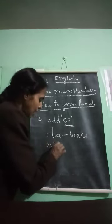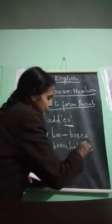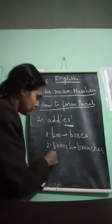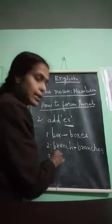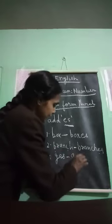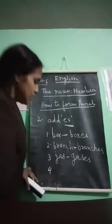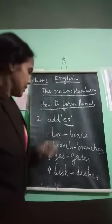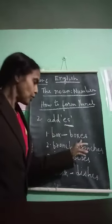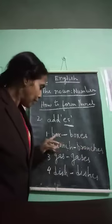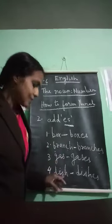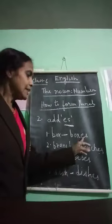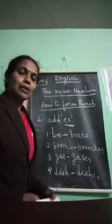Branch → branches, we add -es because it ends in -ch. Gas → gases, dish → dishes. This singular number has changed to plural by adding -es. Nouns ending with -x, -ch, -s, or -sh: we add -es at the end and it will change into plural.